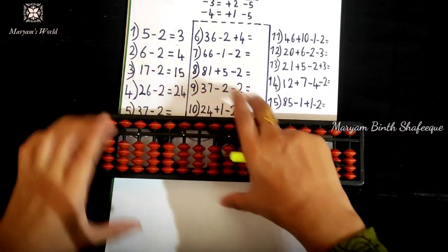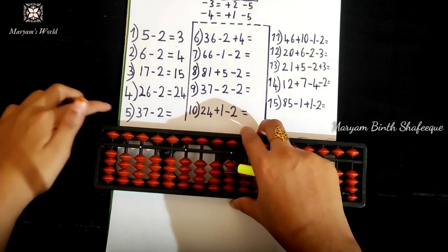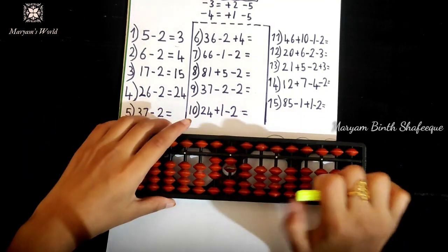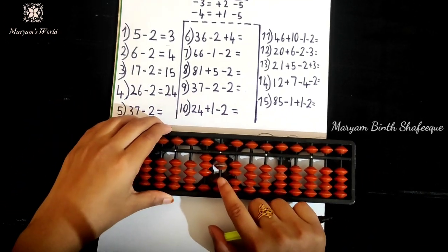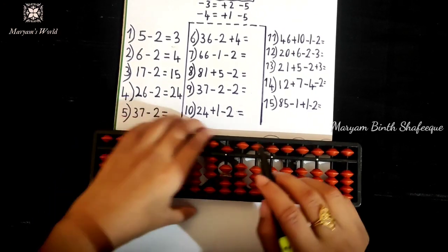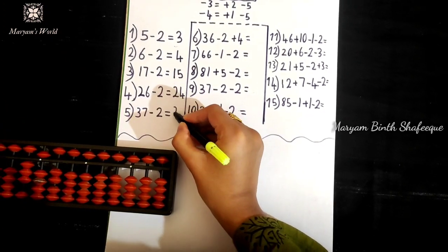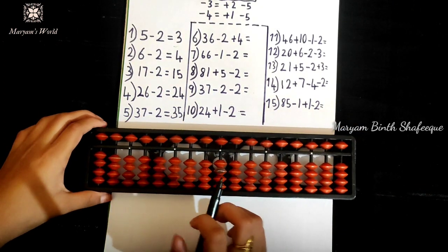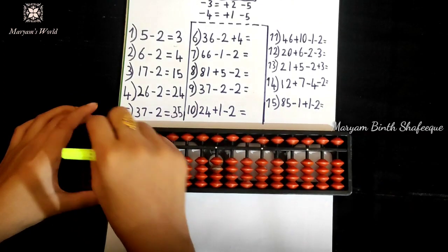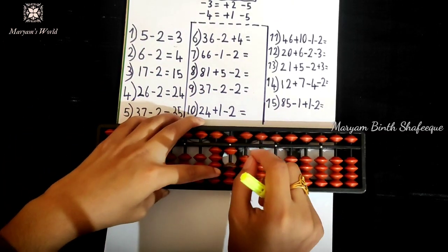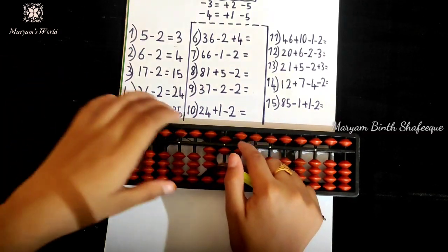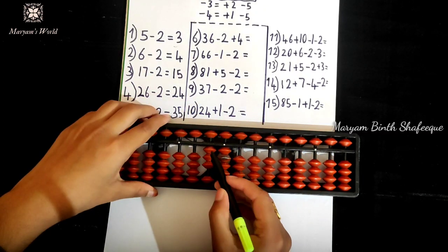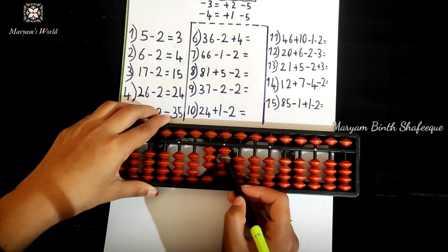Next is 37 minus 2. We will apply the formula. 10, 20, 30, 35. We will write the next one: 36. Minus 2, we write the formula. Minus 2 equals plus 3. That gives 20, 30, 31, 32, 34.